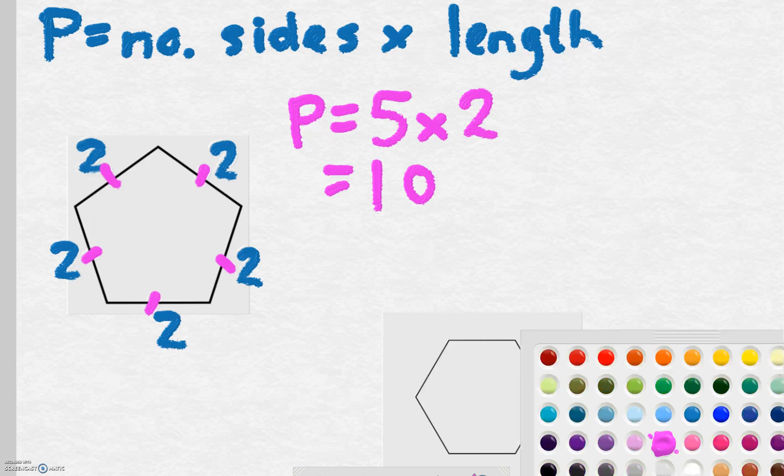Let's look at another shape. Over here this shape is one, two, three, four, five, six. It's a hexagon.